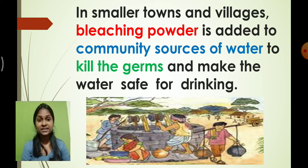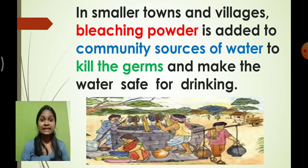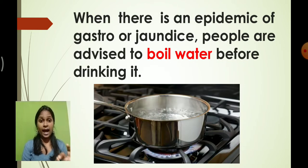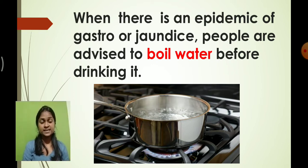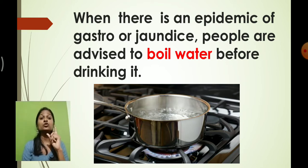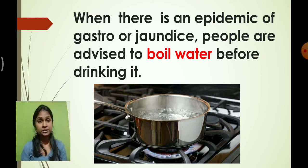Have you ever noticed that during rainy season, the water supplied at home has a different smell? That smell is because of the bleaching powder added by the municipal corporation. When bleaching powder is added to water, it kills the germs and makes the water safe for drinking.